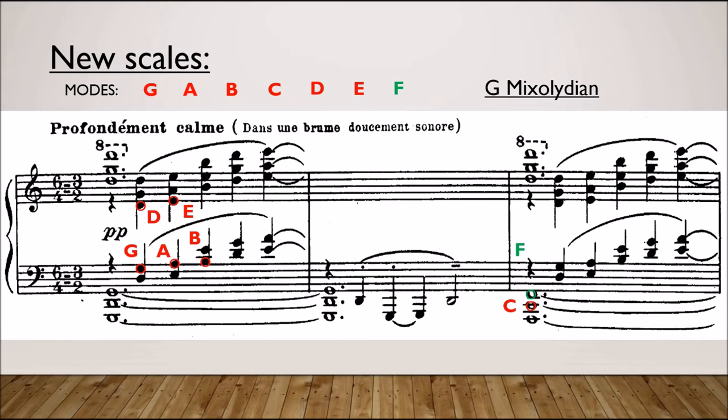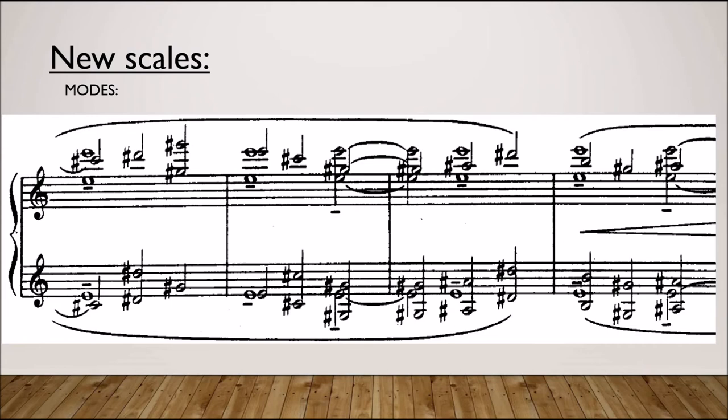Shortly after this section, Debussy transitions to an E pitch center. Let's take a note count: E, G sharp, A sharp, B, C sharp, and D sharp. Even though the F sharp is missing, an E Lydian scale is strongly implied here.